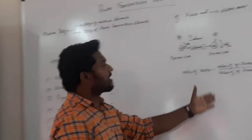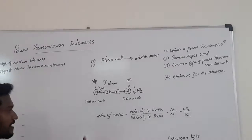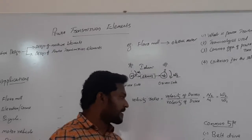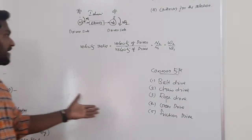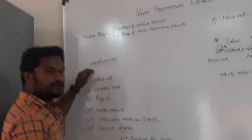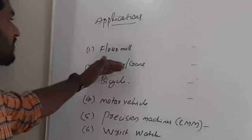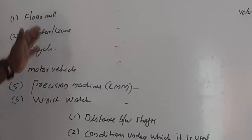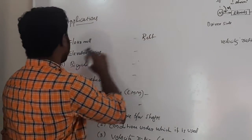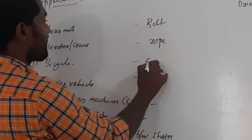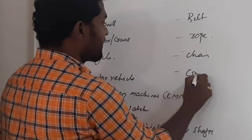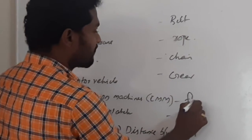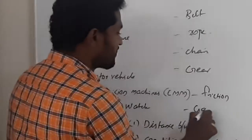Some common examples of power transmission elements used in mechanical engineering are: belt drive, chain drive, rope drive, gear drive, and friction drives. Applications include: flour mills using belt drives, elevators or cranes using rope drives, bicycles using chain drives, motor vehicles using gear drives, precision machines using friction drives, and wristwatches using gear drives.